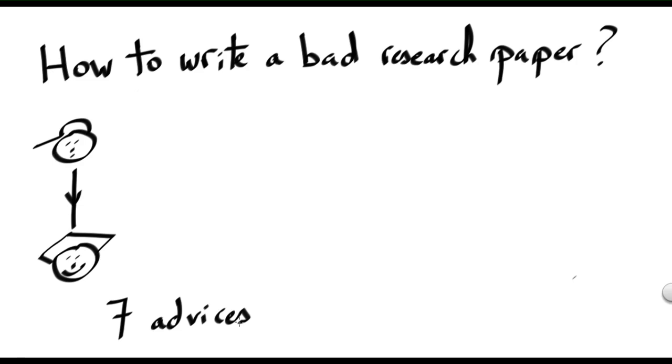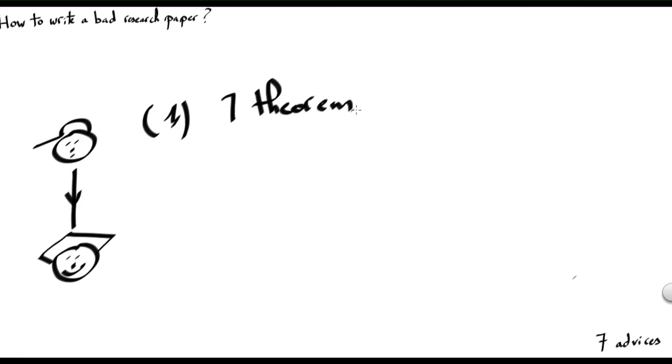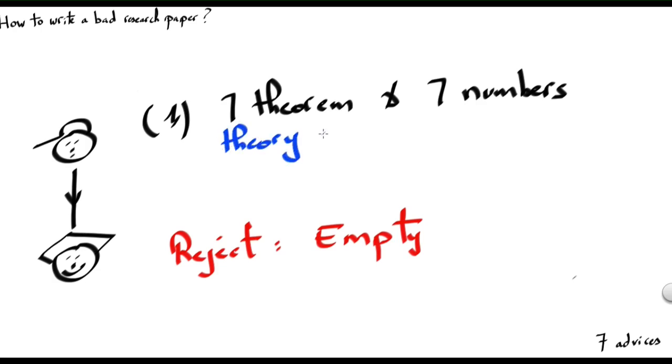I will give seven advices on how to make this reviewer happy. The first advice is not to include any theorem nor any number in the paper. In this case, the task of the reviewer is very simple. In most cases, the reviewer will recommend to reject the paper arguing that it is empty.